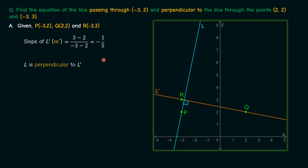Now we know that line L is perpendicular to L'. When two lines are perpendicular the slope of one line will be the negative reciprocal of the another line. So therefore slope of L, that is m, is equal to -1 by m' which is nothing but 5.